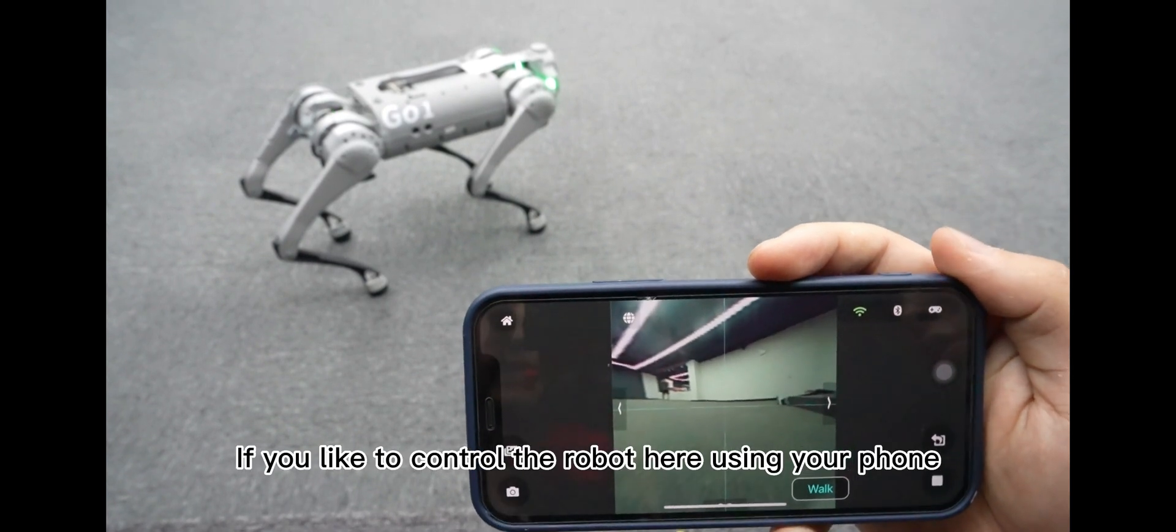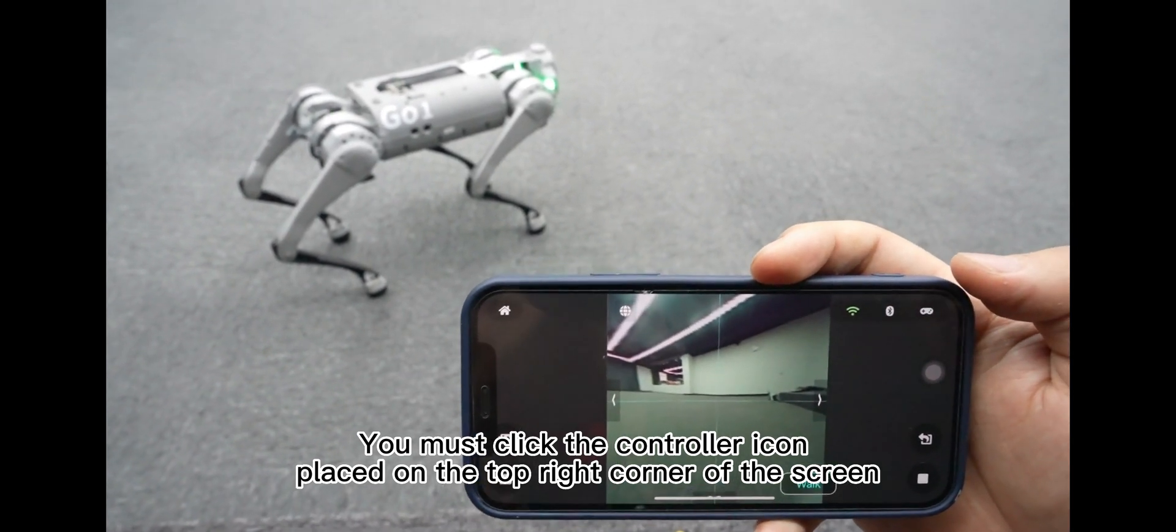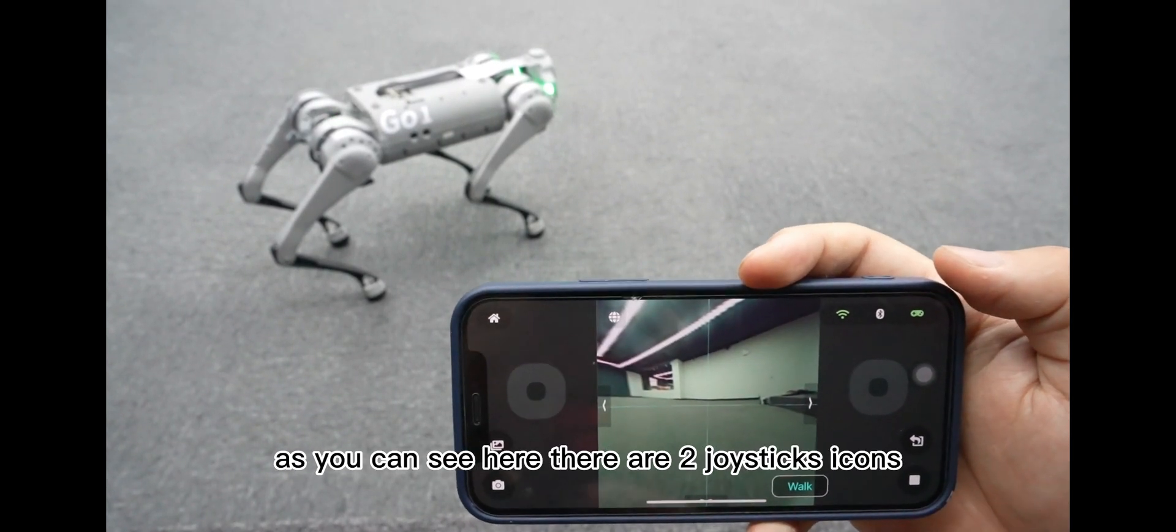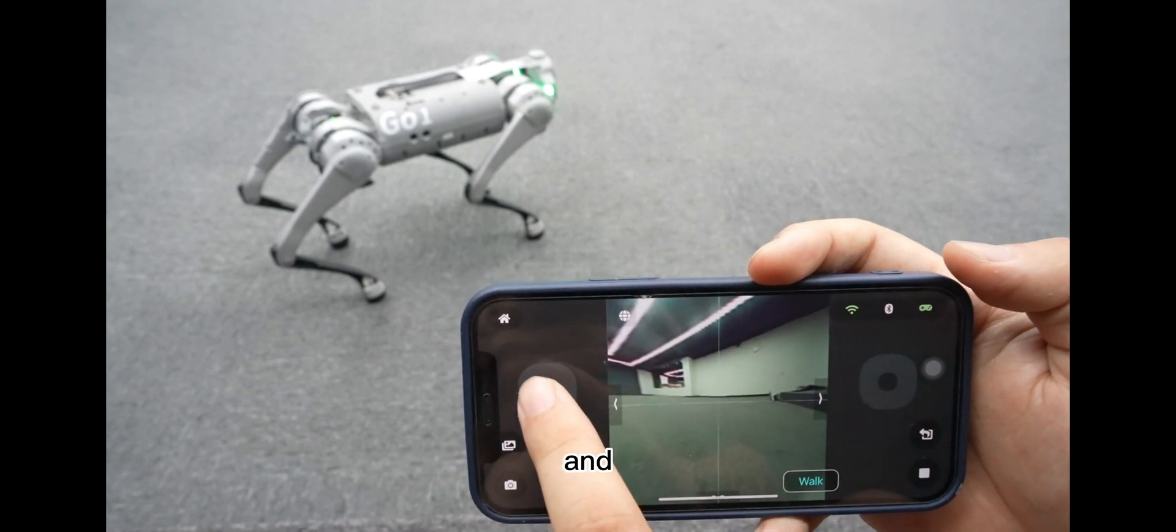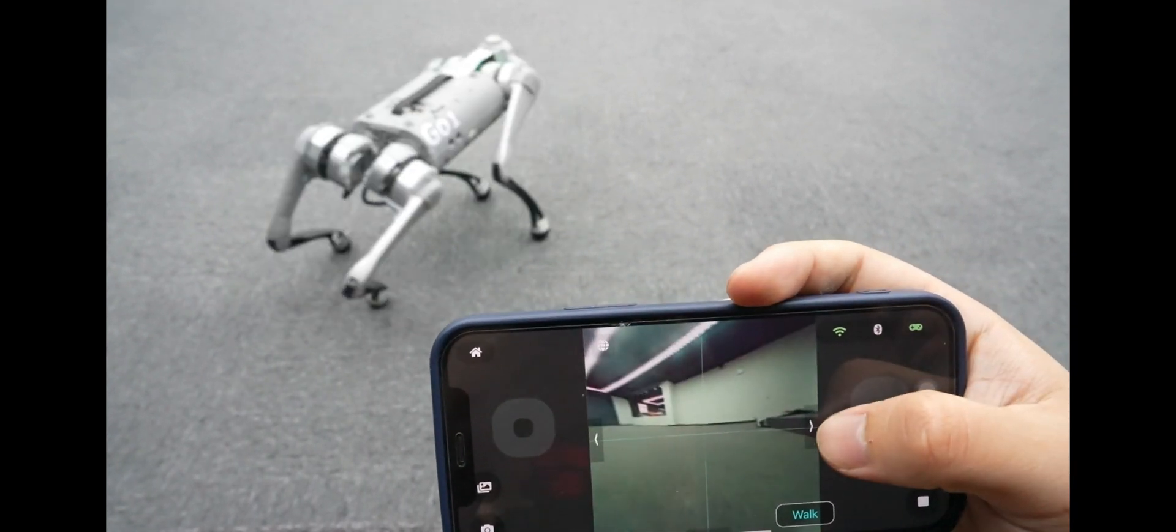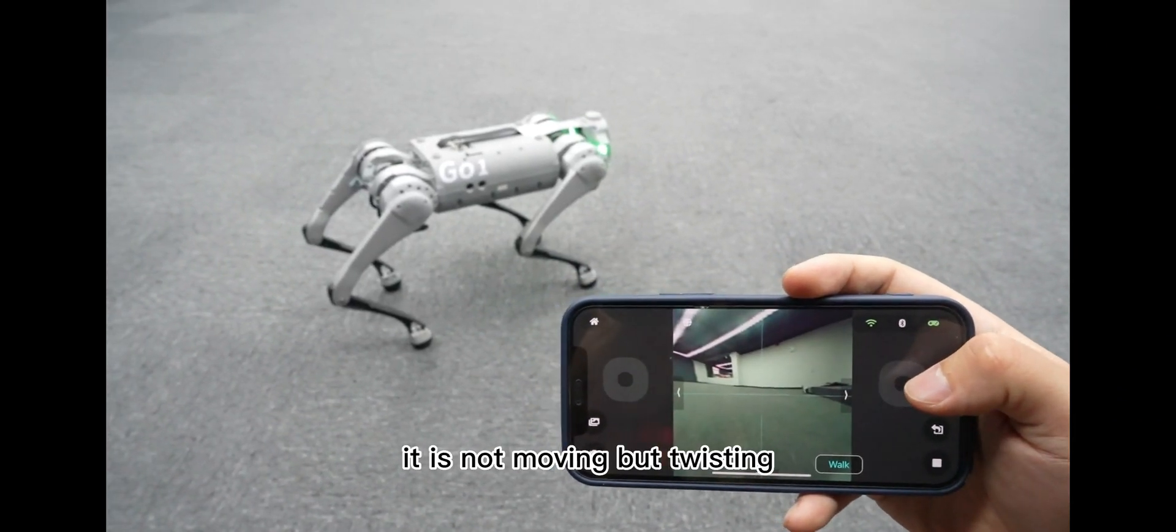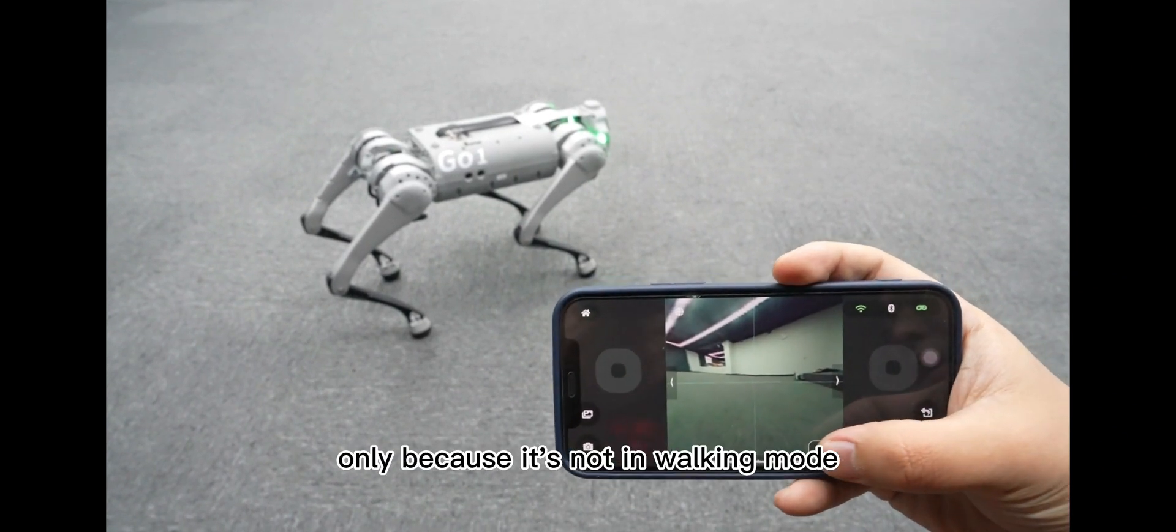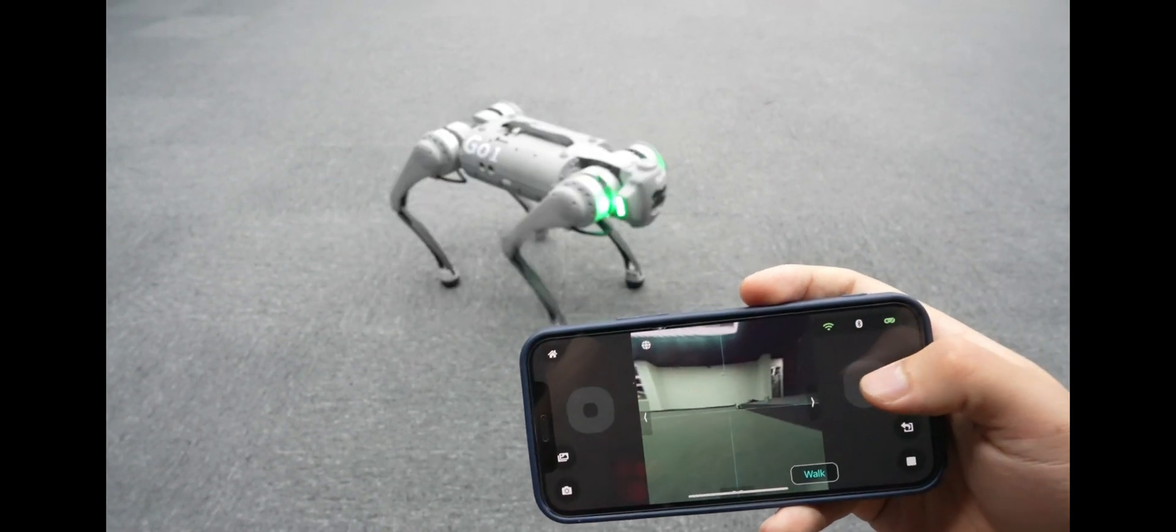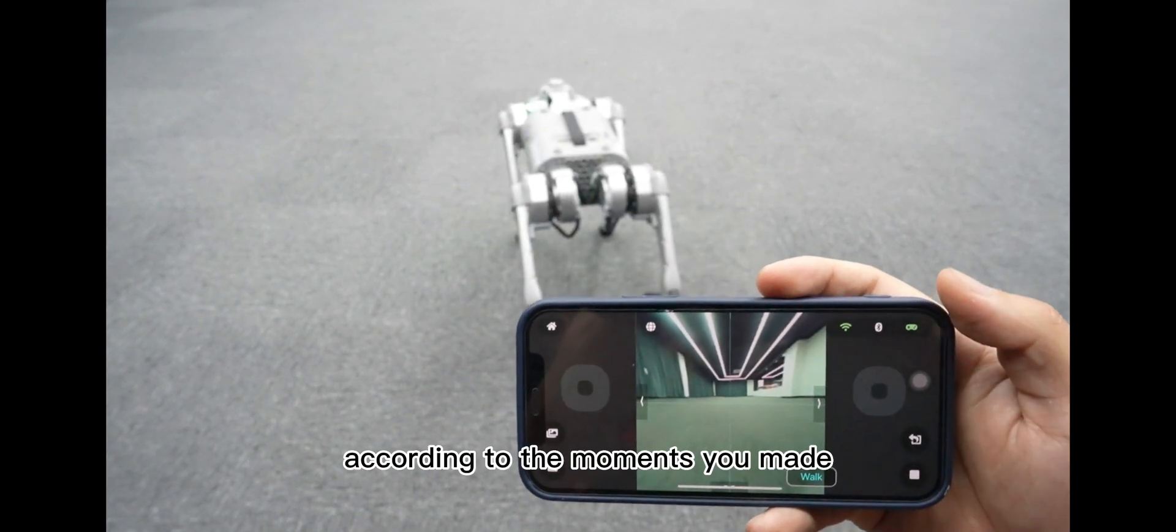If you like to control the robot here using your phone, you must click the controller icon placed on the top right corner of the screen. After you press it, as you can see here, there are two joysticks icons. And you move it. You can see the dog is moving as we control it. It is not moving but twisting only because it's not in walking mode. If you switch to walking mode and start to move the joystick, it shall move according to the movements you made.